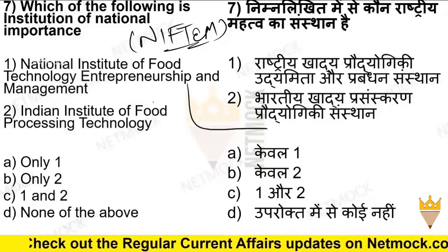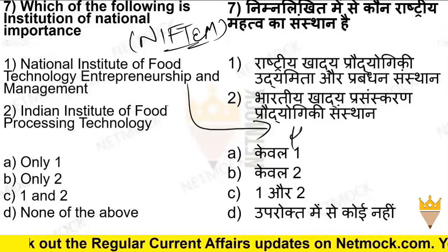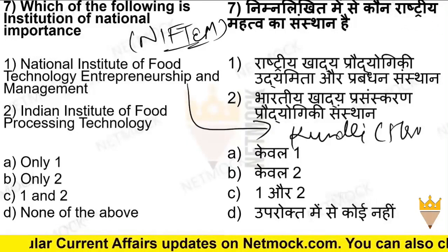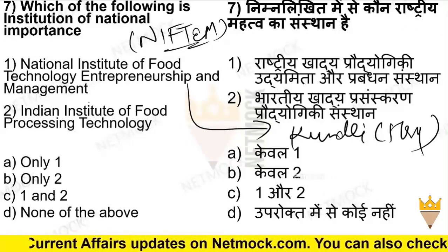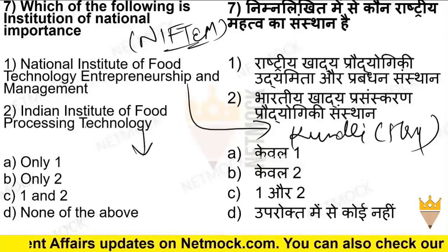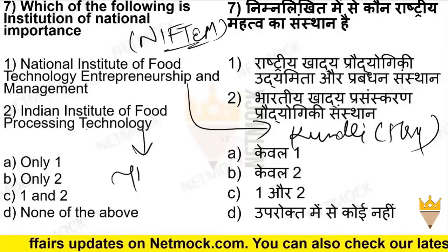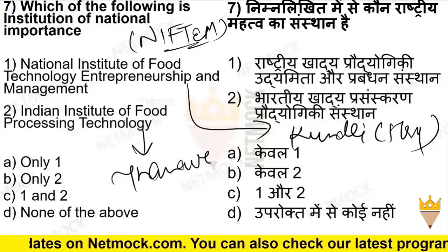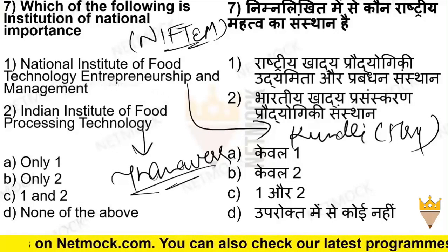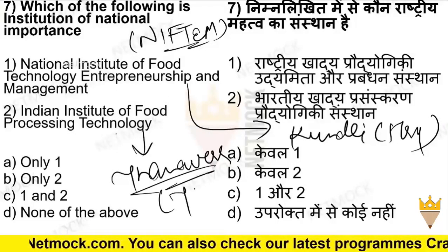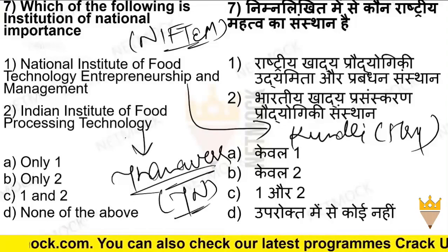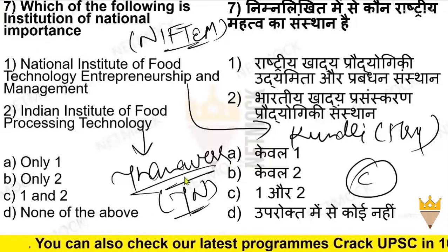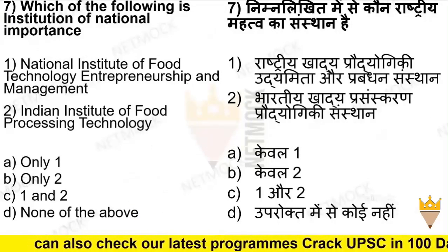The first one, NIFTAM, is located in Kundali, Haryana. The second one, IIFPT, is located in Thanjavur, Tamil Nadu. So the answer is C, and both statements are correct.